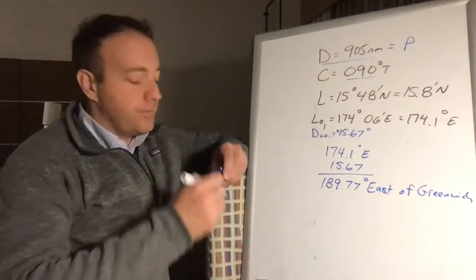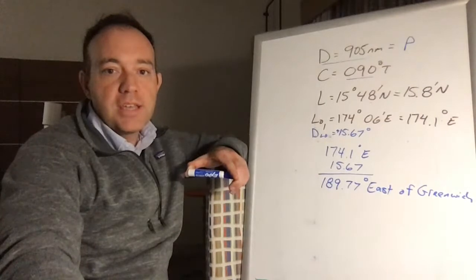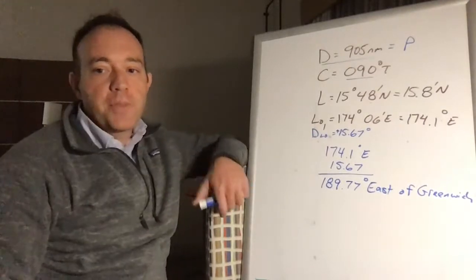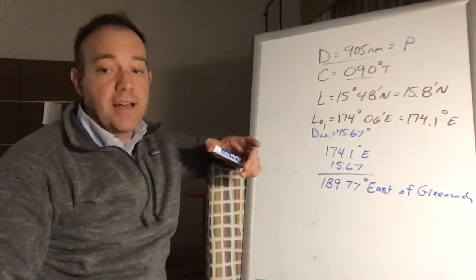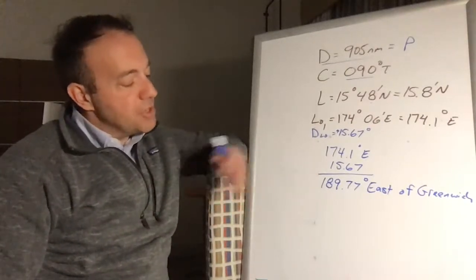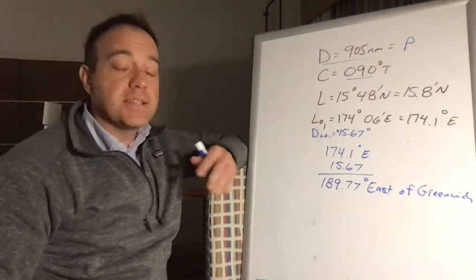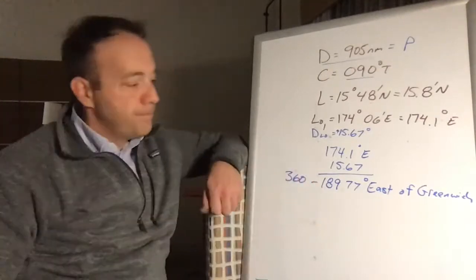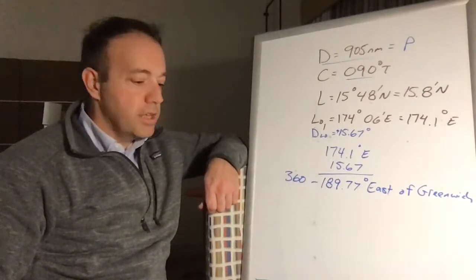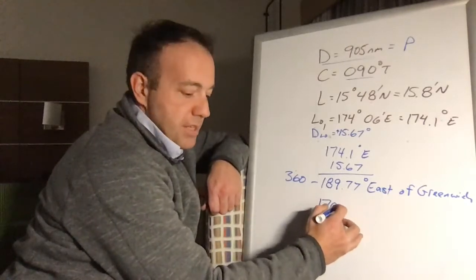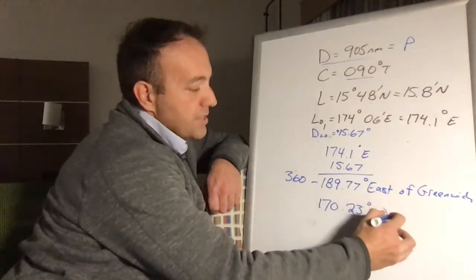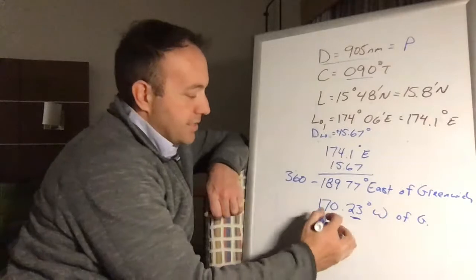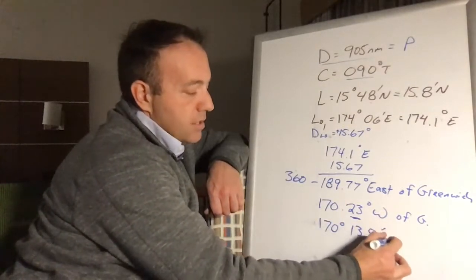Take away 180 — you're 9.77 degrees east of the prime meridian. But to turn that into westerly longitude, it's 360 minus 189.77, because we live on a sphere. So you end up at 170.23 degrees west of Greenwich. Converting: multiply 0.23 by 60 to get 170 degrees 13.8 minutes west as the final answer. That's the correct answer on the license exam multiple choice.